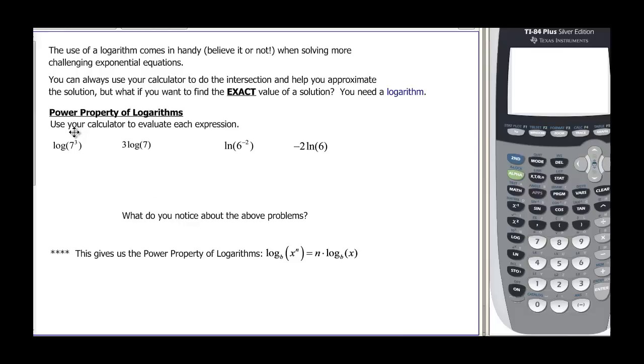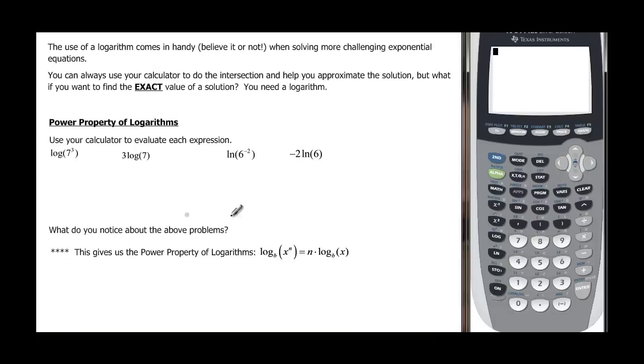There's this property that we have in logarithms that helps us be able to solve these equations. Let's take a look and see if we can figure out what this property really tells us. We want to put these into our calculator just like we see them. So log of 7 to the 3rd power, and then close the parenthesis, and we find out that that is 2.54 if we approximate it. And if we put in 3 times log of just 7, we get that same thing, 2.54 approximately.